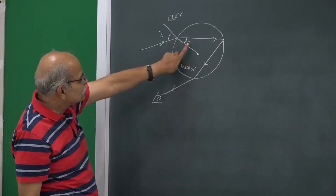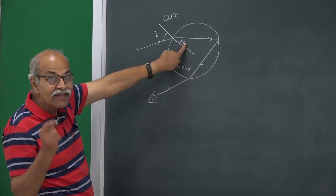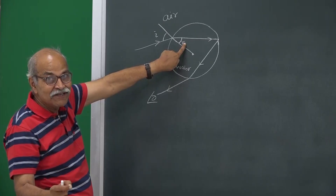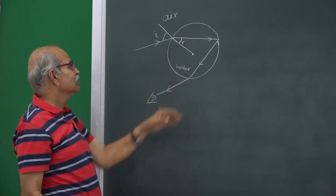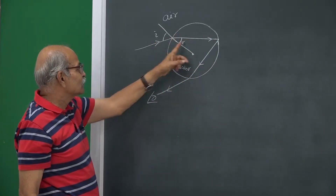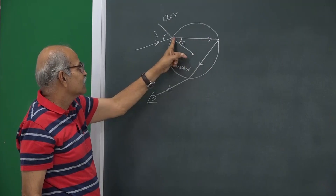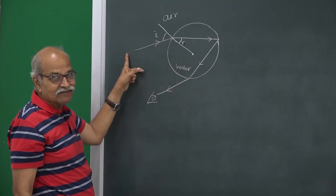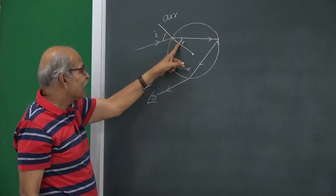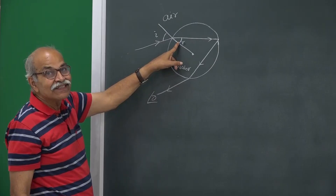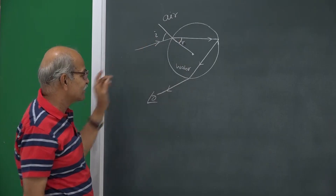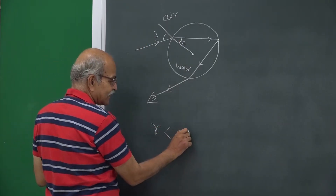This angle of refraction r has to be less than the critical angle. If you reverse the ray — if a ray going like this after refraction will go back out — therefore there is no total internal reflection at the entry surface. This angle r is less than the critical angle; that is the crucial point.